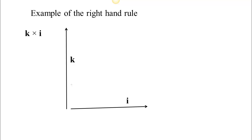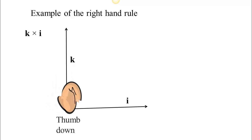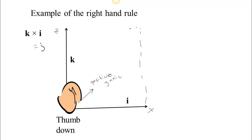One last example: k cross i. Put your hand along k and curl it toward i — your thumb goes down. The x-axis and z-axis are involved here, and if x is here and z is there, the direction into the board must be in the direction of positive y. The length is 1 since both k and i are unit vectors and the angle between them gives a sine of 1. By the right hand rule the answer is the positive y direction, so k cross i equals j.